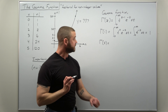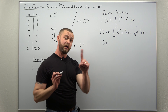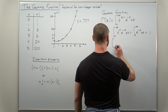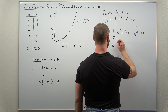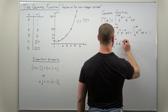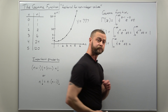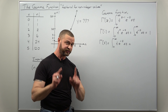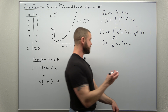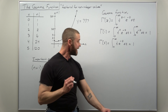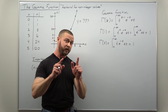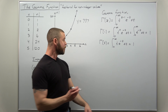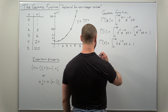Now let's evaluate the gamma function of 2. Plugging in z equals 2, we get t to the two minus one, or just t to the one. So we have the integral from zero to infinity of t times e to the negative t. This one you can evaluate with a straightforward integration by parts just once. You'll find you again get the value 1.